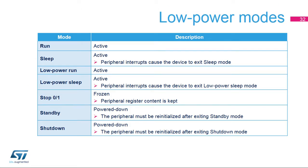This table indicates the state of the general-purpose timers according to the current MCU power mode. In run, low-power run, sleep, and low-power sleep modes, the general-purpose timers are active. In sleep and low-power sleep modes, GPT interrupts cause the device to exit the respective mode. In stop 0 and 1 modes, the general-purpose timers are frozen but the peripheral register content is kept, so no reconfiguration is needed when exiting these modes. In standby and shutdown modes, the general-purpose timers are powered down and must be re-initialized upon exit. For low-power use cases, the LP timer offers extended features such as full operation and wake-up capabilities in stop 0 and 1 modes.